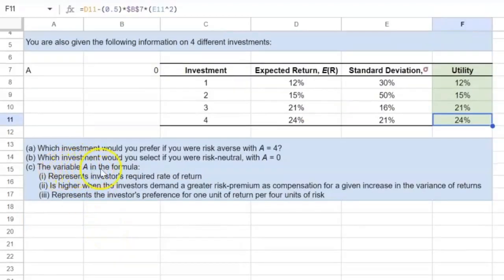Part C of the question asks, what does the variable A essentially represent in the formula? Variable A is representative of the investor's required rate of return. No, it's more a measure of the degree of risk aversion. So that's not quite true.